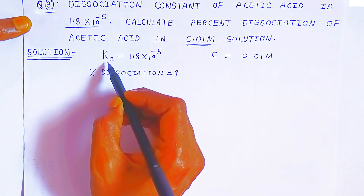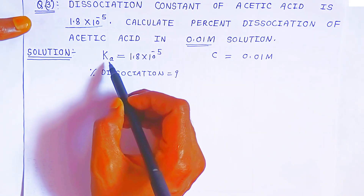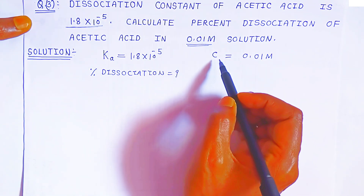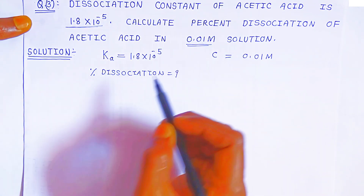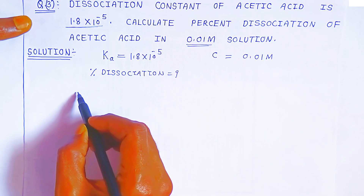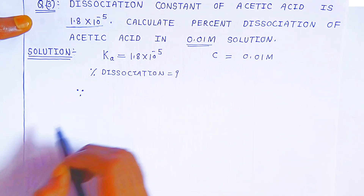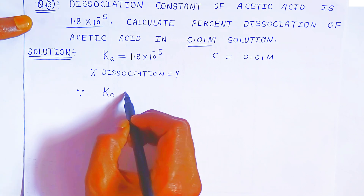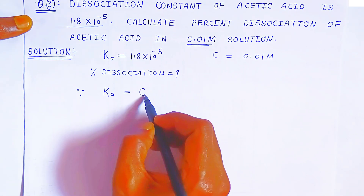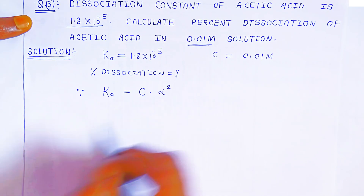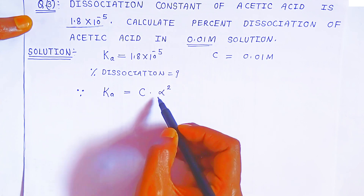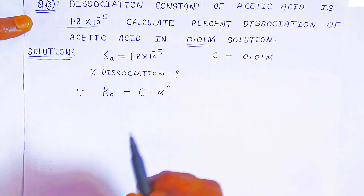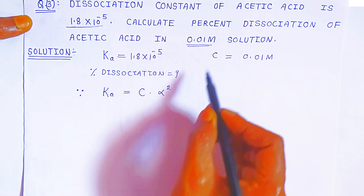Students please pay attention. Now you should know this formula: dissociation constant, concentration of the solution, and degree of dissociation alpha are related. The dissociation constant Ka is equal to concentration C into alpha squared, that is the degree of dissociation. Once you know the degree of dissociation, you can calculate the percent dissociation.